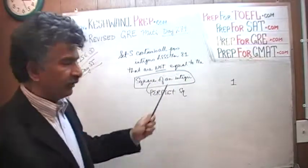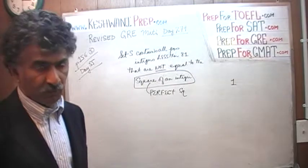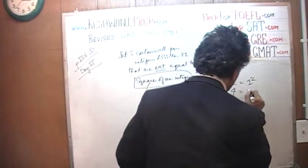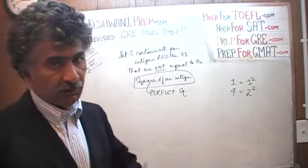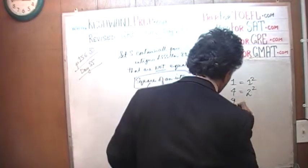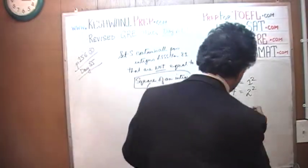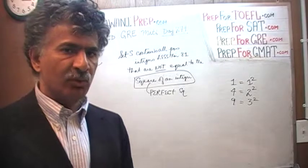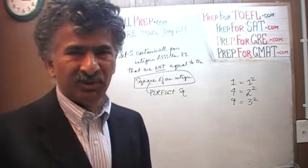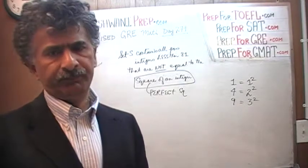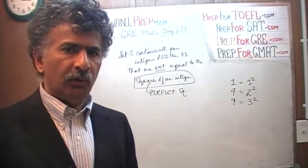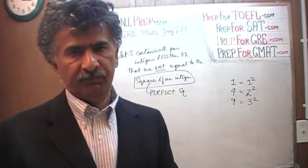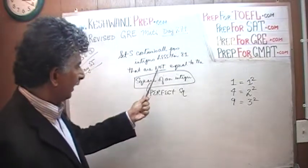For example: 1 is the square of an integer — it's the square of itself. 4 is the square of an integer — the integer being 2. 9 is the square of an integer — the integer being 3. When someone says a number is the square of an integer, they are just saying it is a perfect square. So the question is: of all positive integers less than 81, how many of them are not perfect squares?